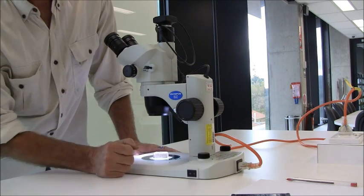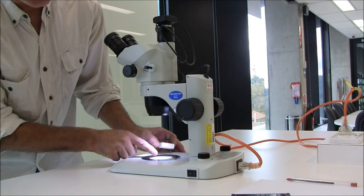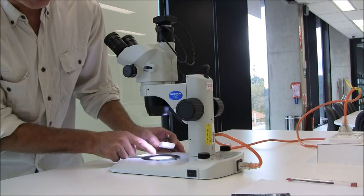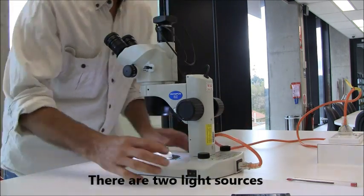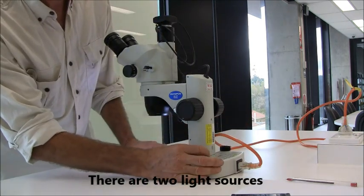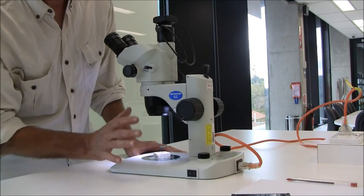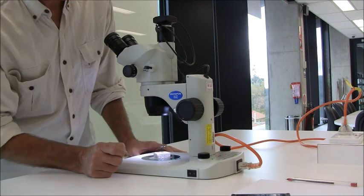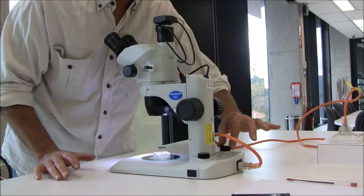You can direct the light from two different paths: from below the specimen using the light intensity dial on the right for fairly thin and small specimens, or you can direct the light from the top using the dial on the left.